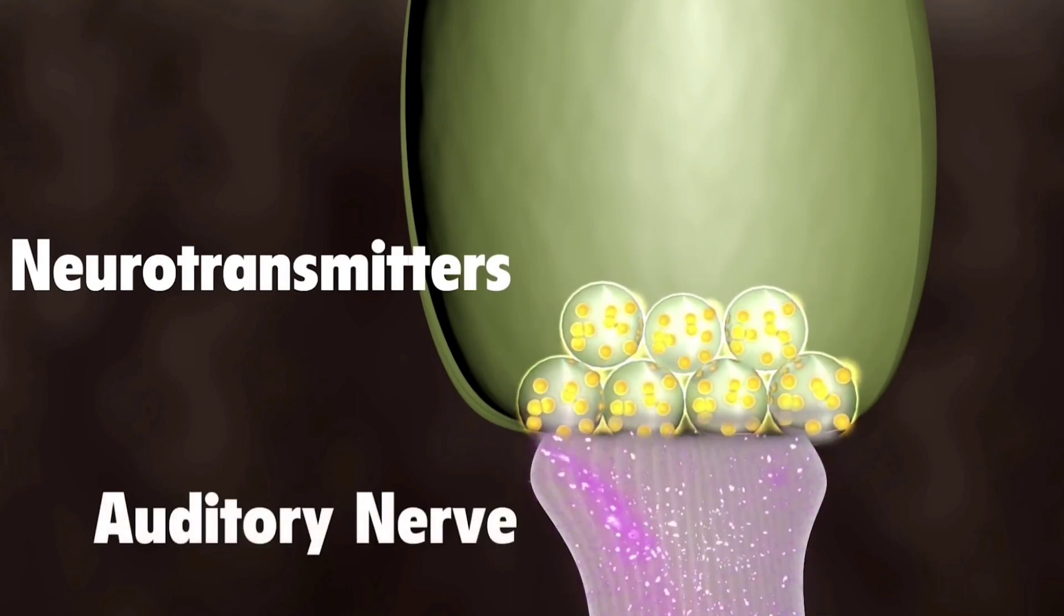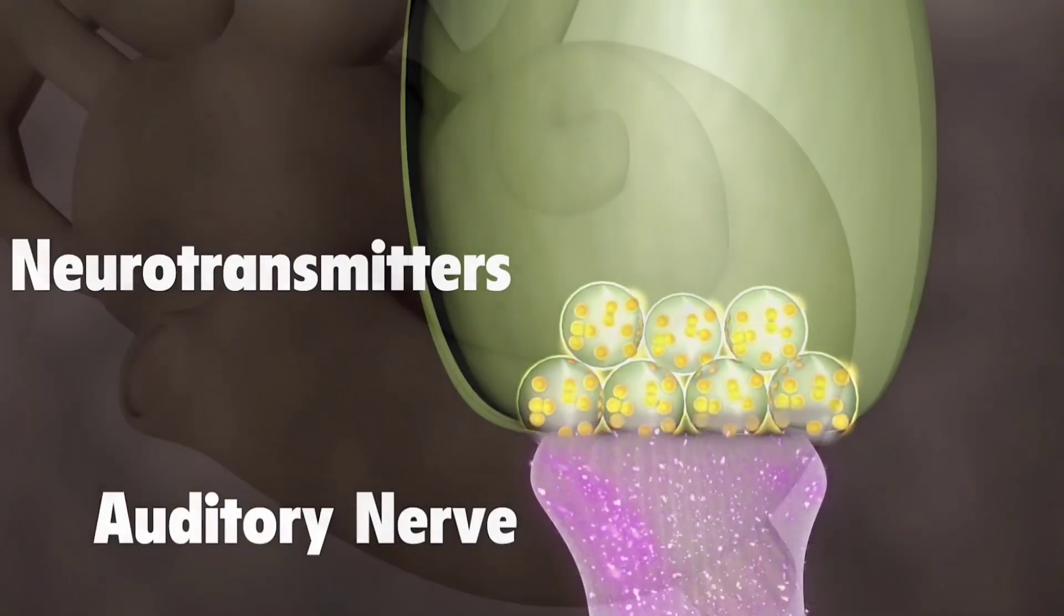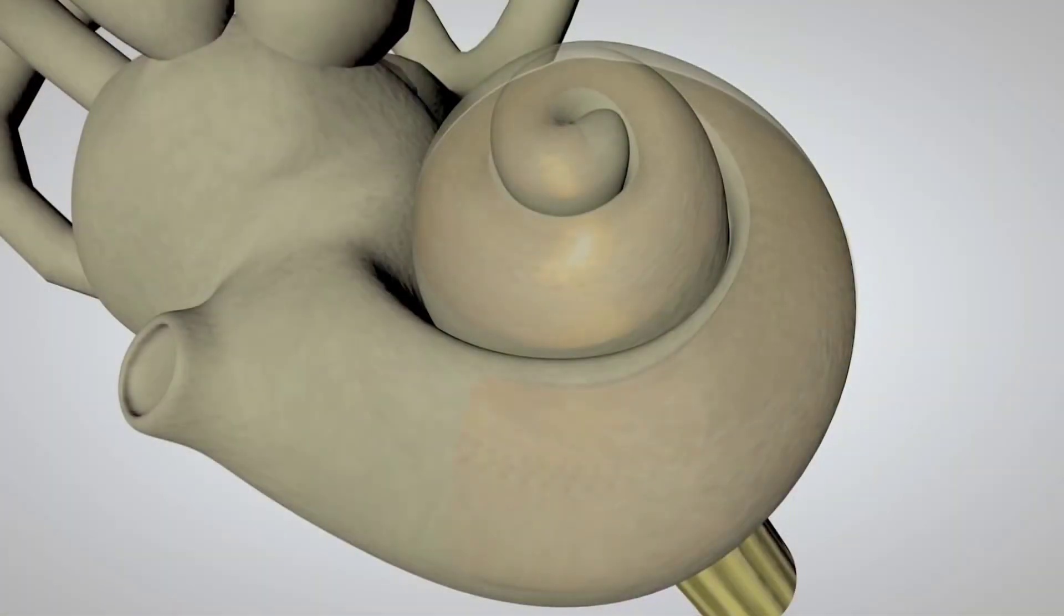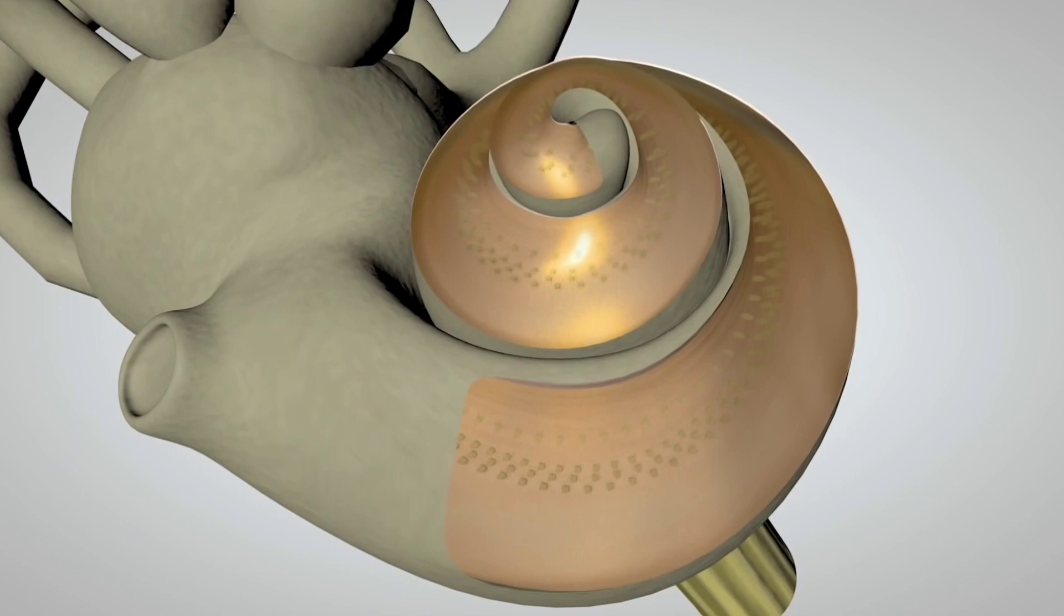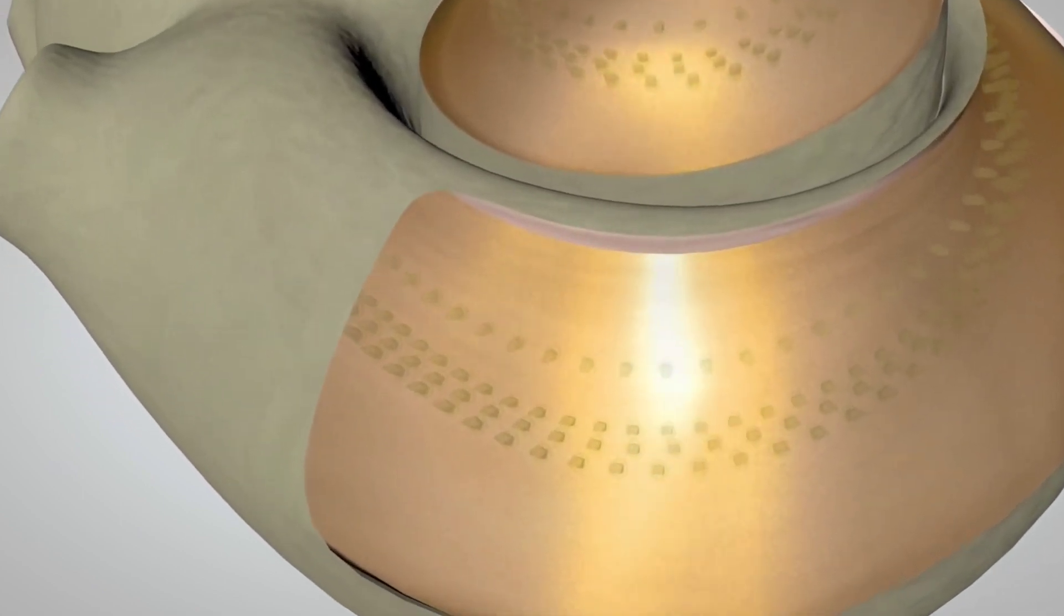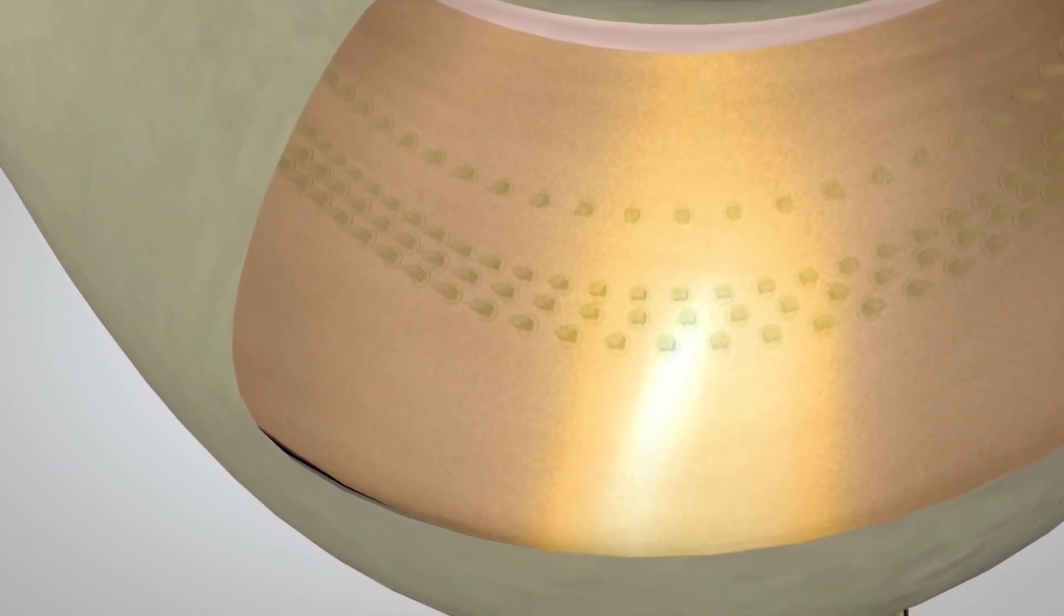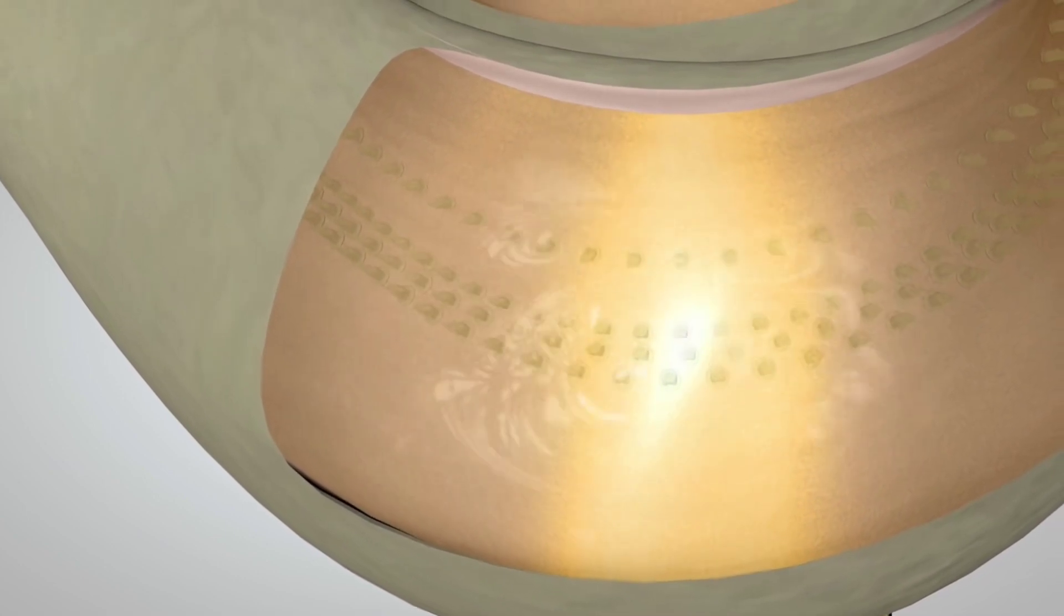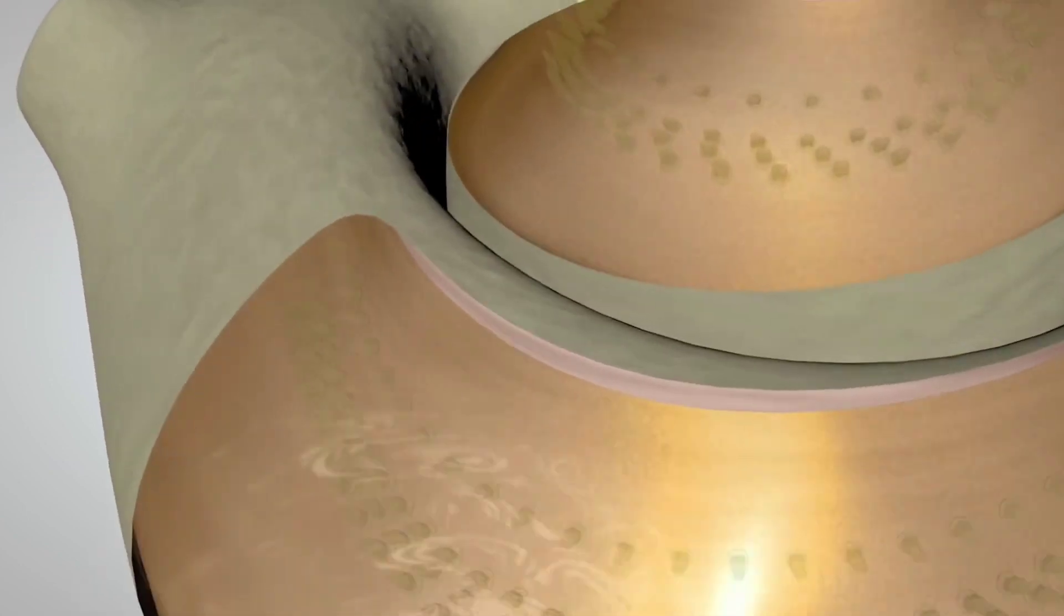As the hair bundles move, ions rush into the top of the hair cells causing the release of a chemical at the bottom of the hair cells. The chemicals bind to the auditory nerve and create an electrical signal.